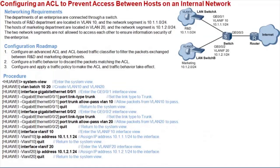Here is an example showing how to configure an ACL to prevent access between hosts on an internal network. The departments of an enterprise are connected through a switch. The hosts of the R&D department are located on VLAN 10, and the network segment is 10.1.1.0/24. The hosts of the marketing department are located on VLAN 20, and the network segment is 10.1.2.0/24. The two network segments are not allowed to access each other to ensure the enterprise's information security.